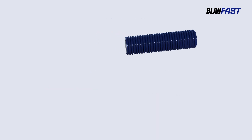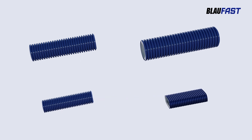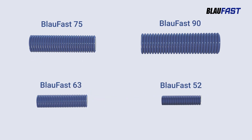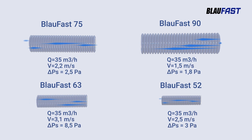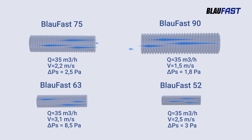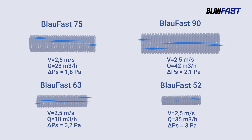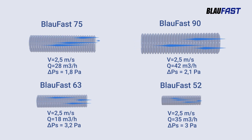Four standard sizes ensure an optimal combination of low aerodynamic resistance and minimum space occupied by the system. Depending on the project needs, Blaufast allows creating both the most compact systems with somewhat increased resistance and systems with minimum pressure losses that occupy slightly more space in a room.